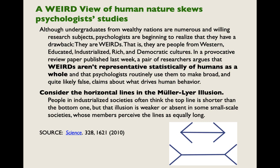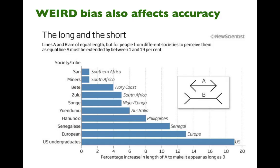A WEIRD view of human nature skews psychologist studies. Although undergraduates from wealthy nations are numerous and willing research subjects, psychologists are beginning to realize that they have a drawback. They are WEIRDs — people from Western, Educated, Industrialized, Rich, and Democratic cultures. In a review paper published recently, a pair of researchers argued that WEIRDs aren't representative statistically of humans as a whole, and that psychologists routinely use them to make broad and quite likely false claims about what drives human behavior. Consider the horizontal lines in the Müller-Lyer illusion. People in industrialized societies often think the top line is shorter than the bottom one, but that illusion is weaker or absent in some small-scale societies whose members perceive the lines as equally long. WEIRD bias also affects accuracy — even though the lines are of equal length, people from different societies perceive them differently.